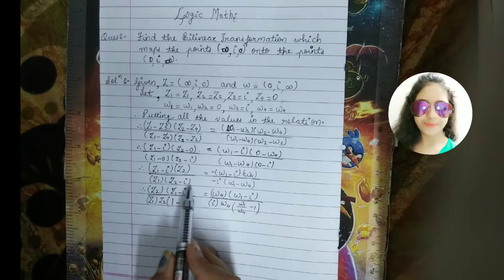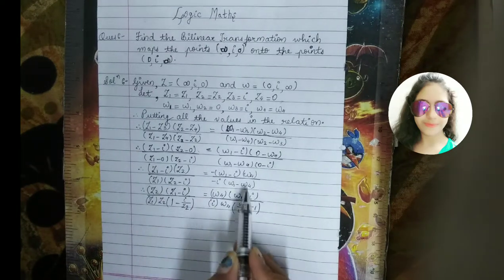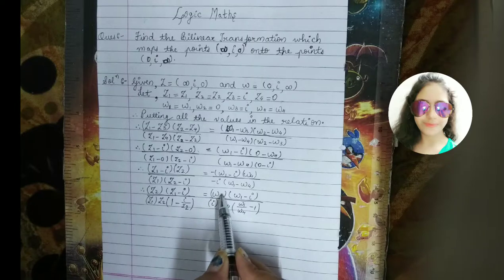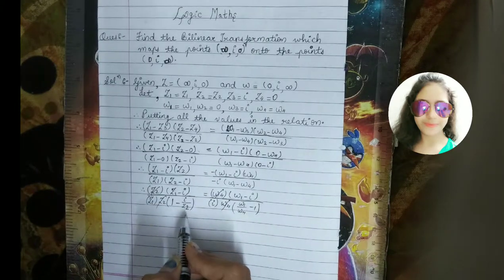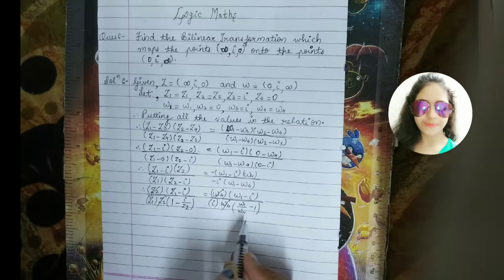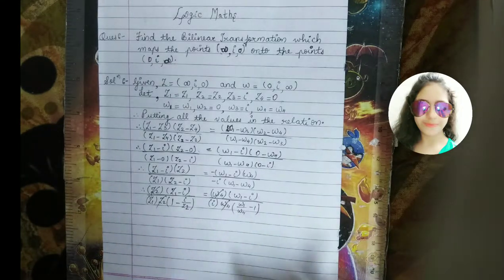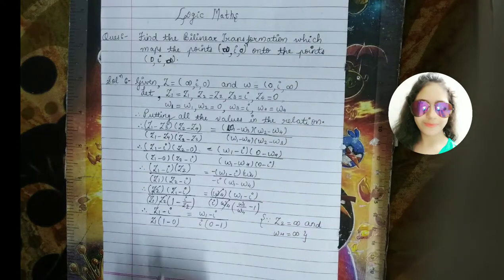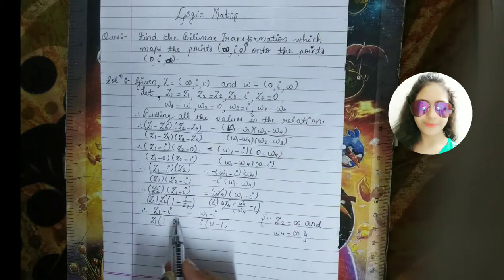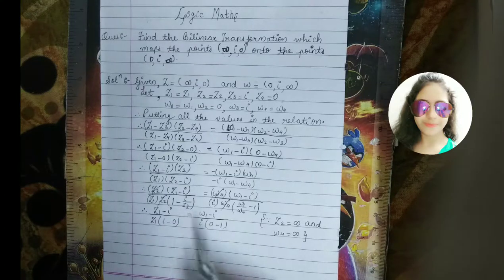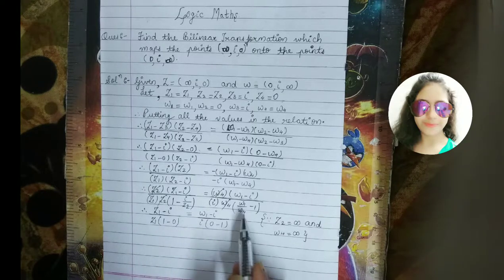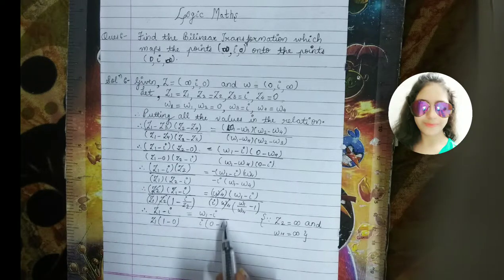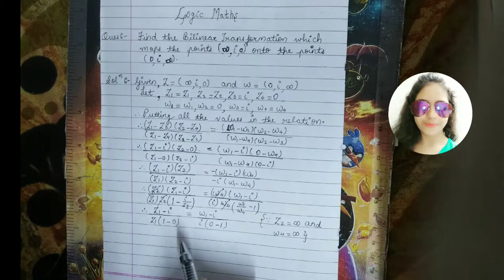In the next step we will remove z2 from the denominator and omega4 from the denominator, because these values are infinity in the question. I have removed z2 from the bracket and omega4 from the denominator. This and omega4 from the denominator cancel, and z2 from the denominator cancels here as well. Then I put z2 and omega4 to infinity — and 1 upon infinity is 0 — so I get the whole term as 0. That is why I have written 1 minus 0 here, and 0 minus 1 here.